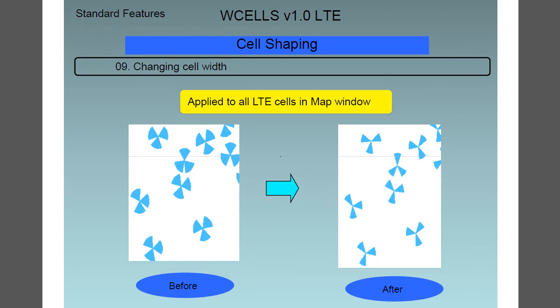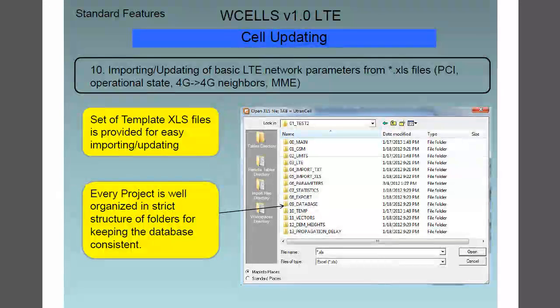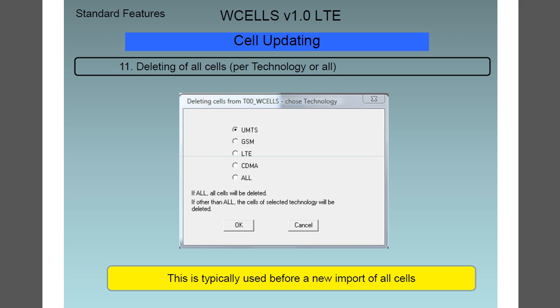Feature number nine is cell updating, and again you can see the before and after images after the change has been applied to all LTE cells in the map window. Cell updating includes importing and updating the basic LTE network parameters from XLS spreadsheet files, including PCI, the operational state, the 4G to 4G neighbors, and MME. For your convenience, a set of template XLS files is provided for easy importing and updating, and every project is organized into a strict folder structure to keep the database consistent. Feature number eleven is the deleting of cells. It is possible to delete cells either per technology or all of them, and this is something you would typically do before importing all cells.